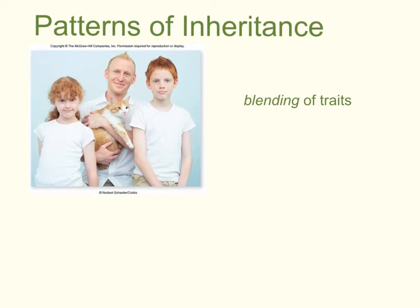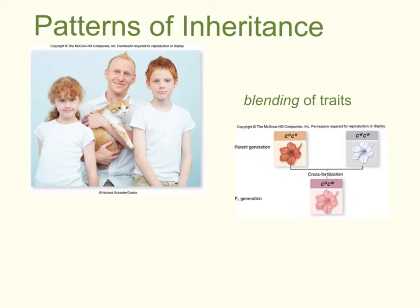However, there was a problem with this idea. This view could not explain some of the observations of early biologists studying inheritance. Some offspring would have traits matching the grandparents and not the parents. For example, if a plant with red flowers was mated with a plant of the same species that had white flowers, the next generation plants would have pink flowers. If you then cross-fertilized those pink-flowered plants, the next generation would be expected to have all pink flowers if blending inheritance were correct. But what they actually saw was some plants in that third generation would have pink flowers, some would have red flowers, and some would have white. Many researchers at the time were trying to figure out how blended inheritance could produce this type of result.